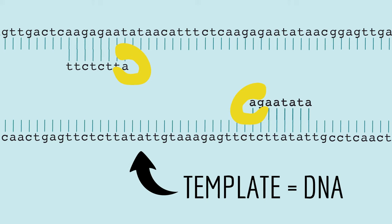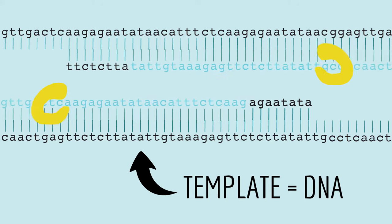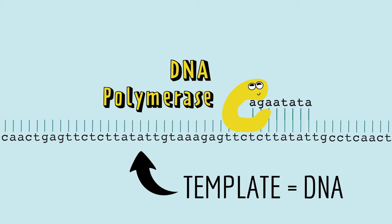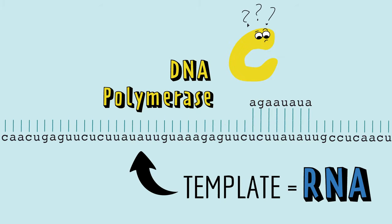Reverse transcription PCR is a PCR that uses RNA as a template. Now, for a normal PCR reaction, DNA polymerase makes copies from a DNA template, not RNA. And in fact, DNA polymerase can only copy DNA — it cannot use RNA as a template.